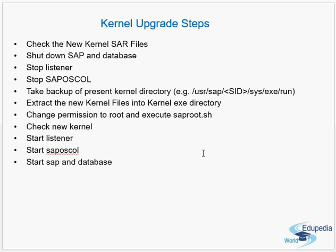During the kernel upgrade process, all old files in the kernel directory are replaced with the new files. Check and adjust permissions as needed, and run saproot.sh as the root user. After SAP has started, log in and perform checks. You can verify the new kernel version from the OS level using the command disp+work -v, which shows the current kernel release.